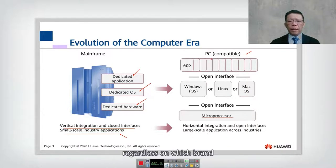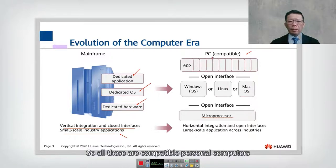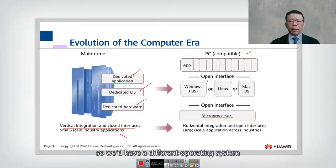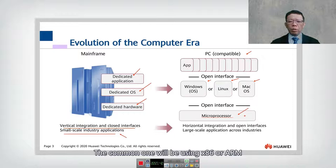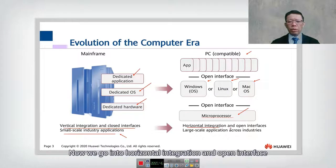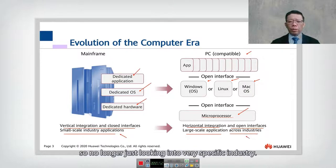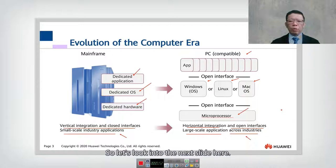Computing evolved into the PC-compatible era. Regardless of brand — HP, Dell, Lenovo — these are compatible personal computers that can run many applications, with different operating systems such as Windows, Linux, or Mac OS running on a similar platform using x86 or ARM microprocessors. We moved from vertical integration to horizontal integration and open interfaces for large-scale applications across industries. Now, how is this related to our network?